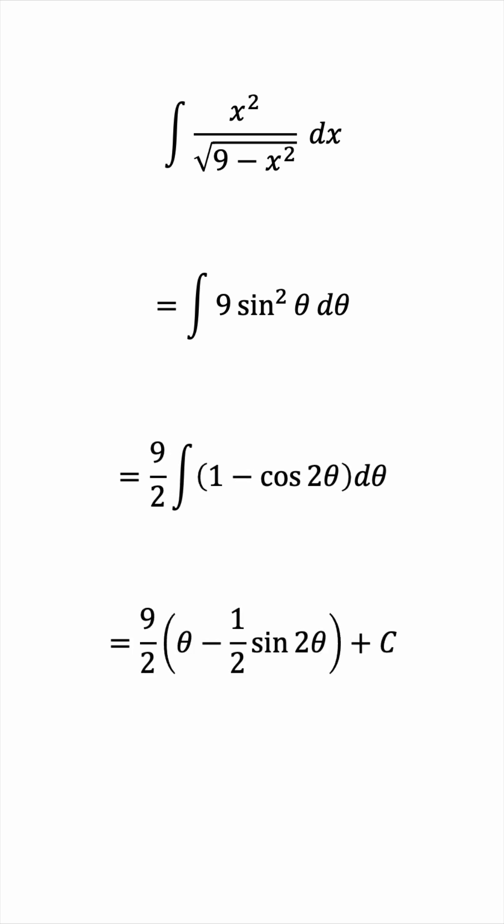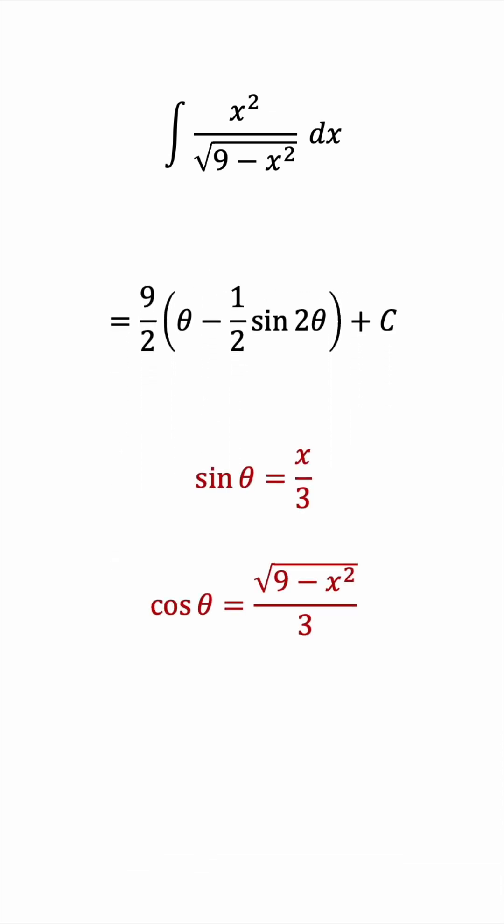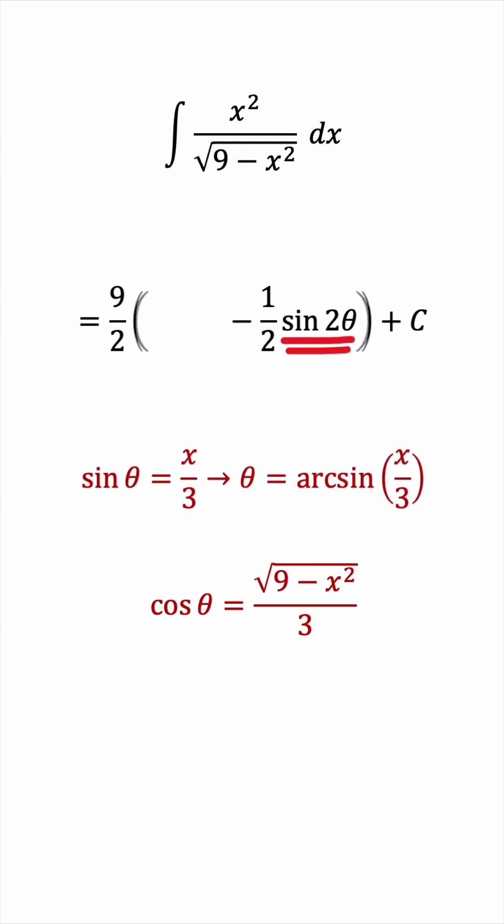The next step is to take everything back to x. But remember that we had sine theta and cosine theta in terms of x. Here we find theta and sine 2 theta, so how do we represent these in terms of x? Well, theta can be found simply by taking the inverse sine, and that will give us arc sine x over 3. So that's theta done.